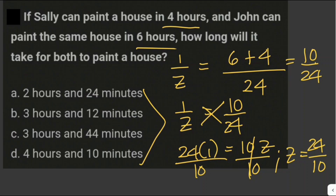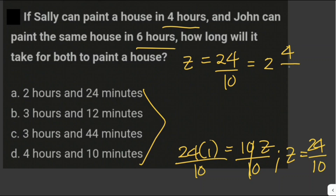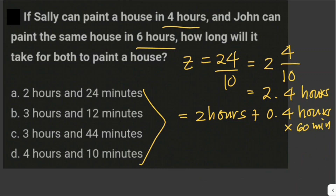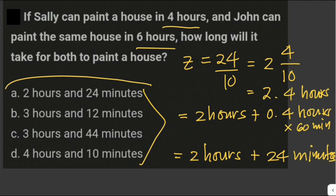Since 2.4 hours is not listed in the choices, we split it into 2 hours plus 0.4 hours, then convert 0.4 hours to minutes by multiplying by 60 minutes, giving 24 minutes. Therefore the total time is 2 hours and 24 minutes, and the answer is letter A.